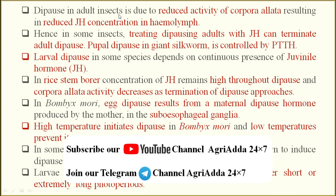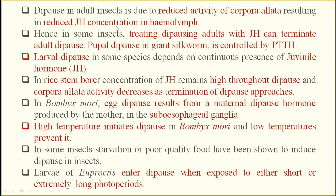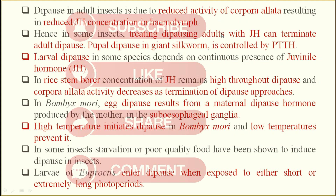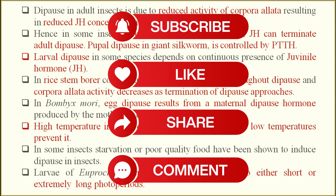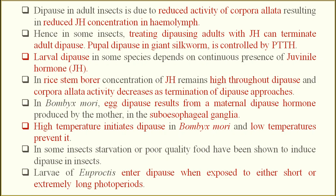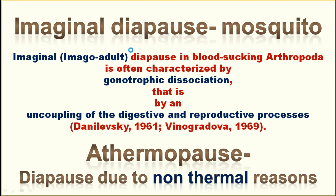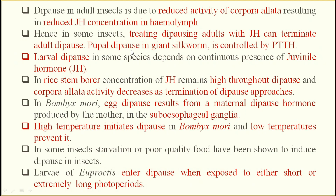Diapause in adult insects is due to reduced activity of the corpora allata, thus reducing juvenile hormone (JH) concentration in the blood. Hence in some insects, diapause in adults can be terminated by applying excess amounts of JH, which is controlled by the prothoracicotropic hormone (PTTH). Larval diapause in some species depends upon the continuous presence of juvenile hormone.